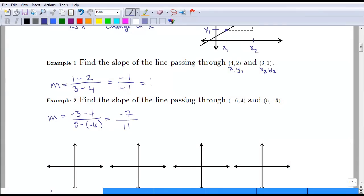For this example, you should have ended up with a slope of negative 7 elevenths. This means that for every 7 units we actually go down, because this is negative, we are going to go across in the x direction by 11 units.